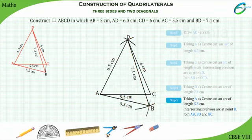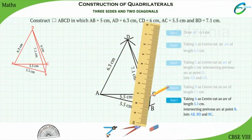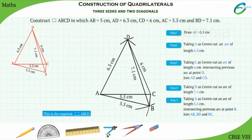Now the only remaining side of the quadrilateral ABCD is BC. Join BC. This completes your quadrilateral ABCD.